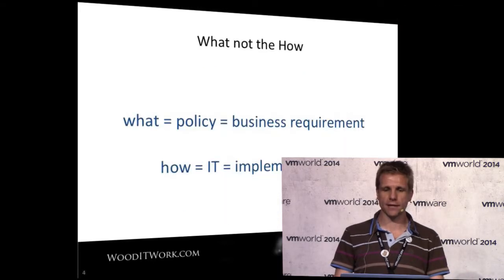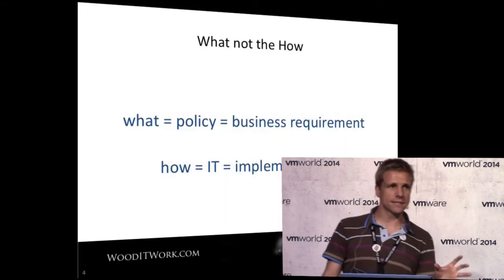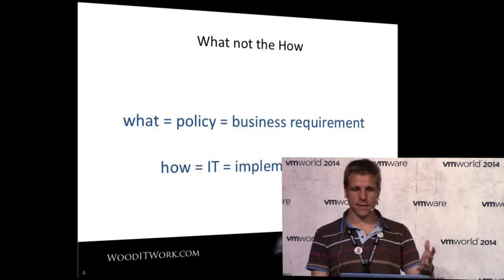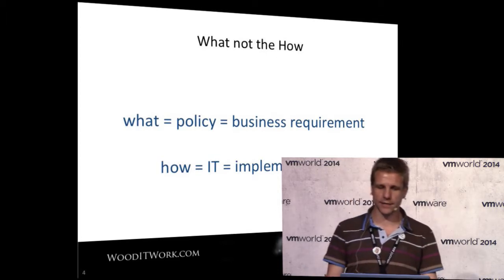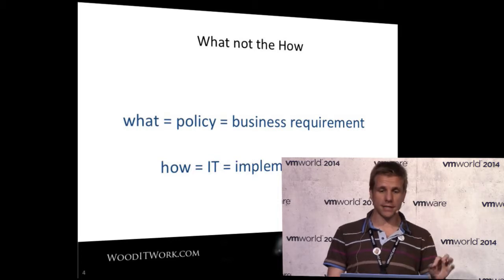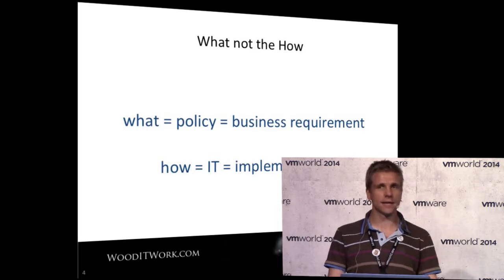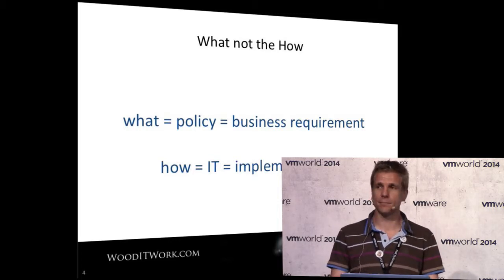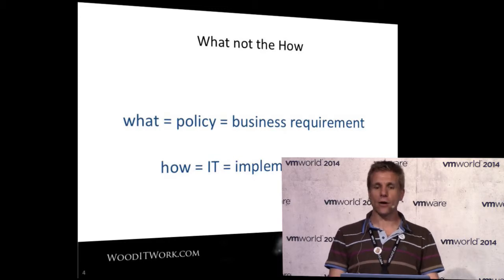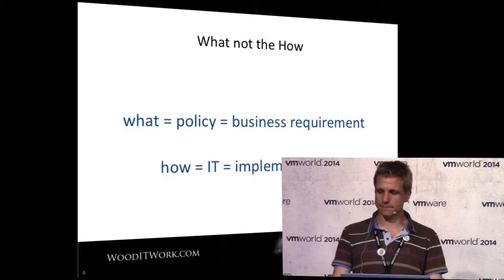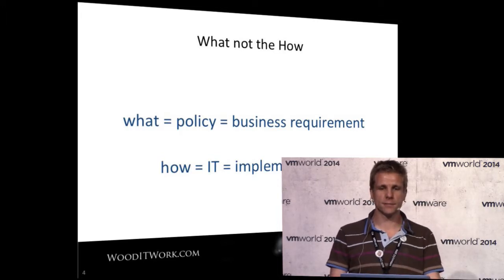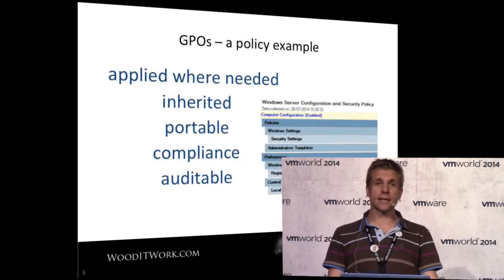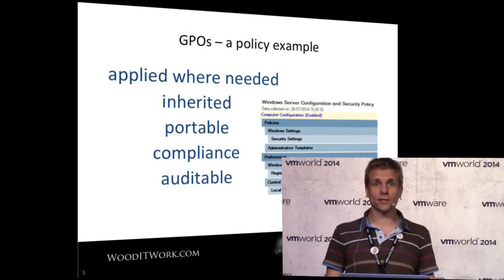That's the difference between policy and automation. Policy is the difference between the 'what' and the 'how' of things. The 'what' is the policy - that is your business requirement, the kinds of things your business says are important for your IT. The 'how' is actually how that is implemented. That's one of the distinctions with policy in the software-defined data center rather than just automation. An example, going into the Windows world, is GPOs.